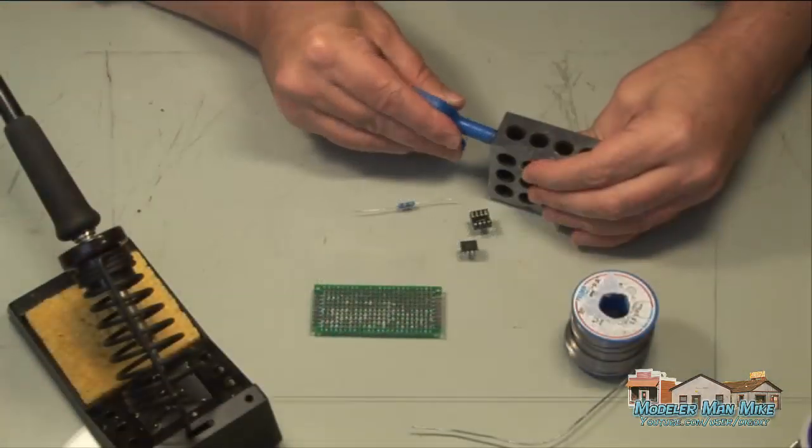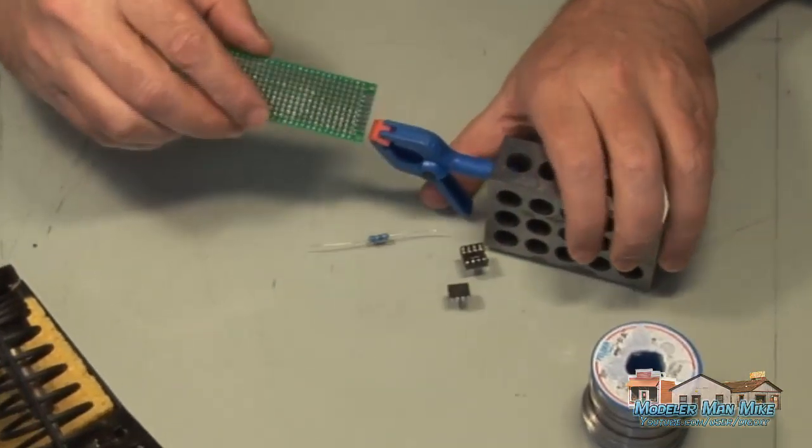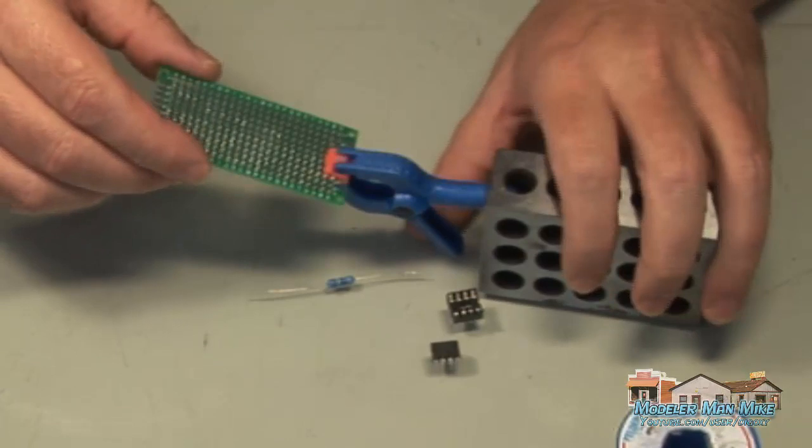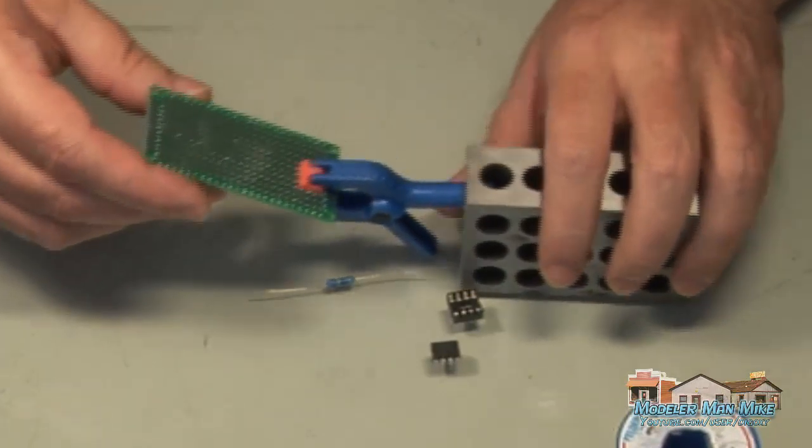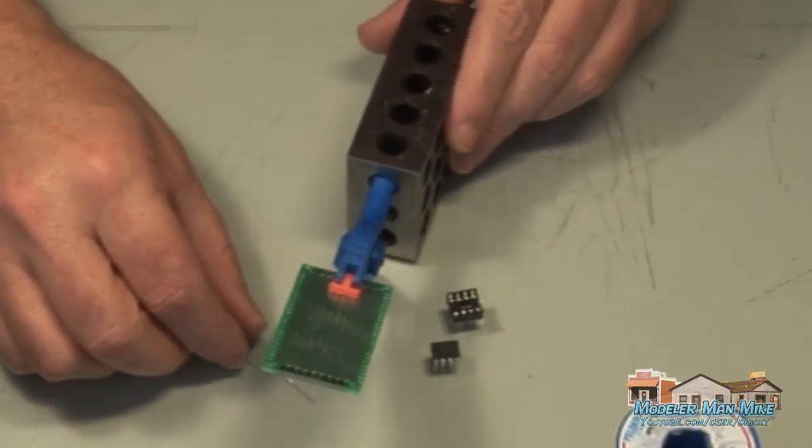When you're working with your electronics and soldering, you want to have something to hold it. This is one of my 1-2-3 blocks with a clamp. This is what I use. A lot of people use what they call a third hand, which works great too. This is what I use.